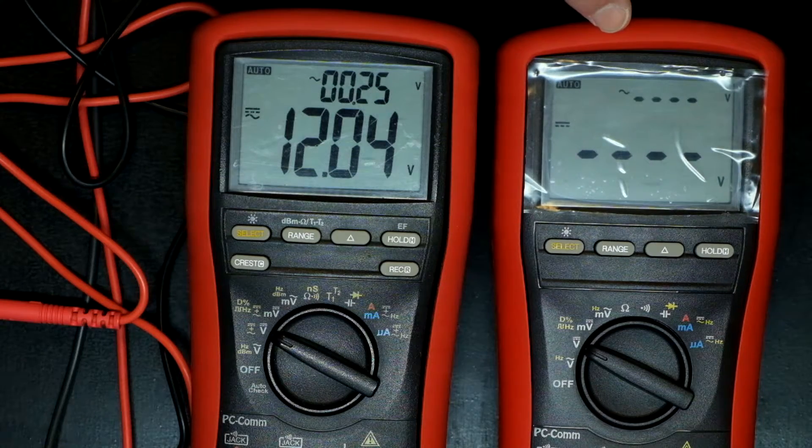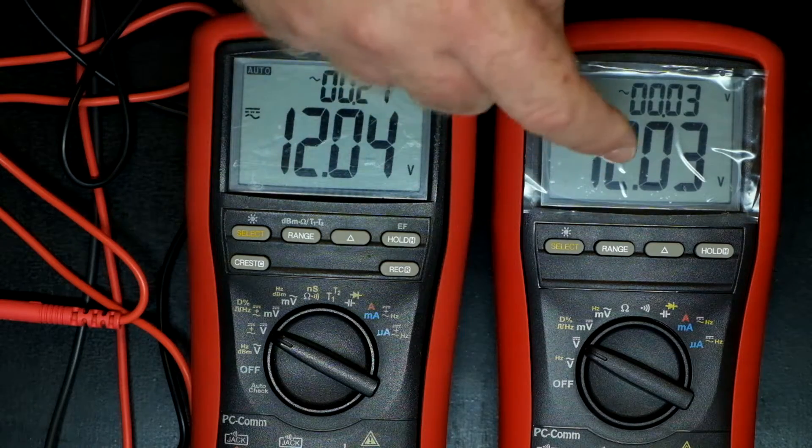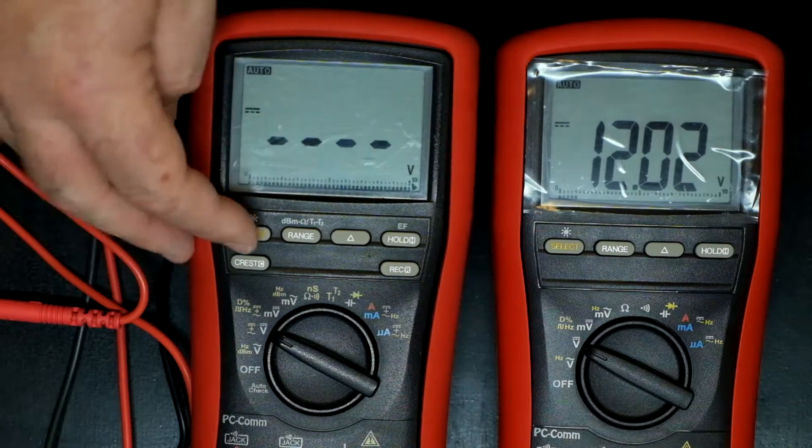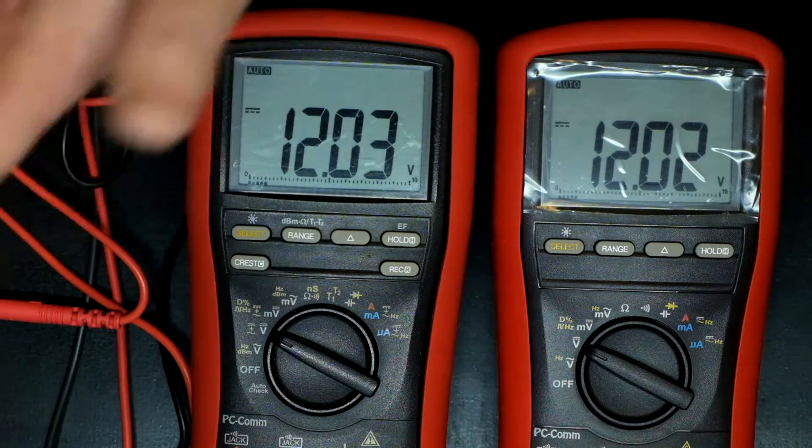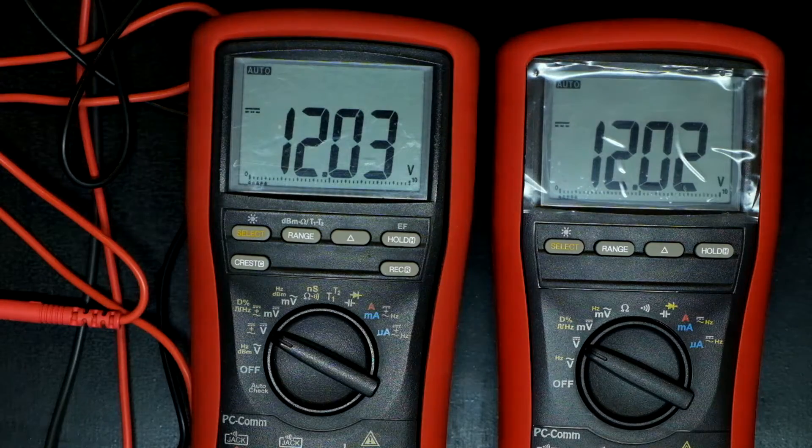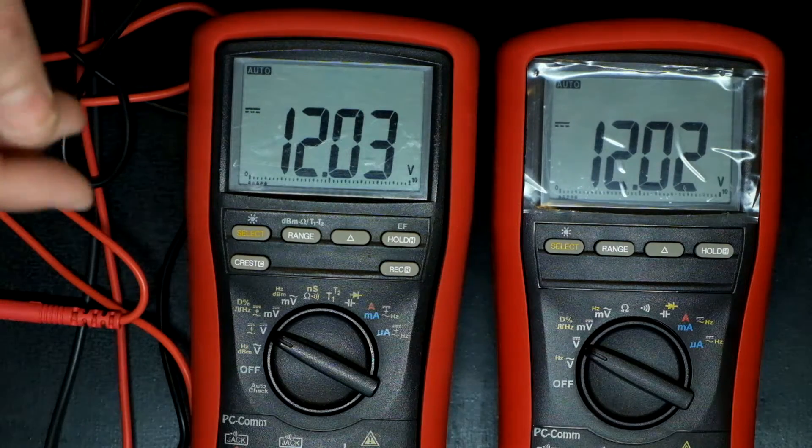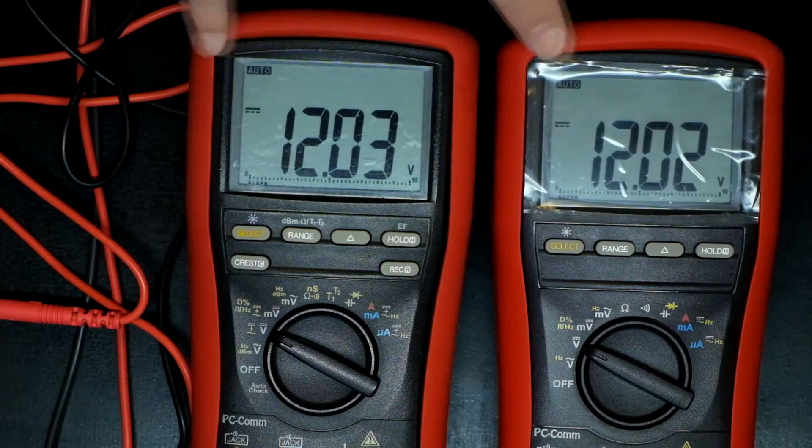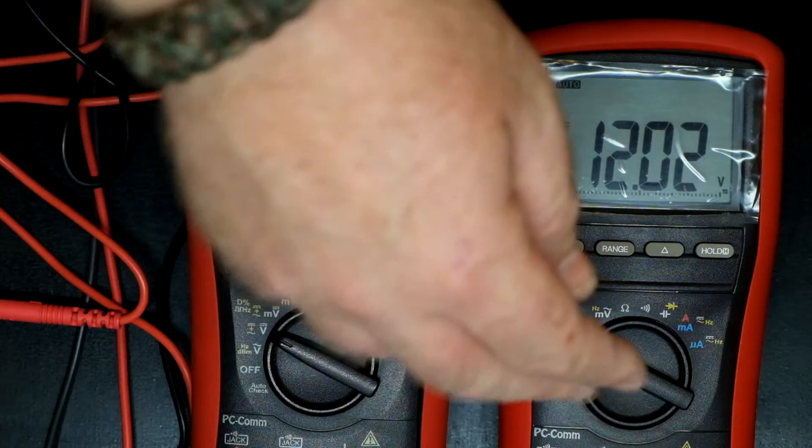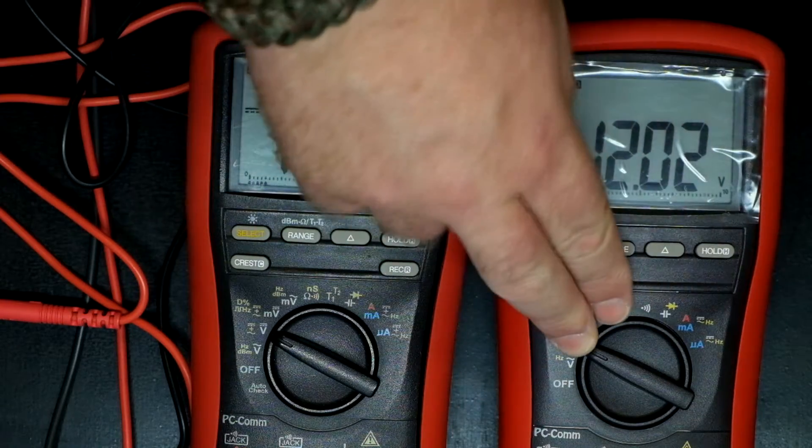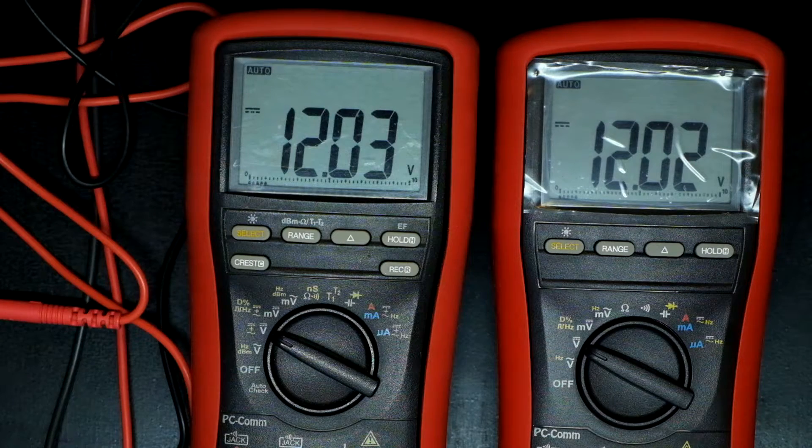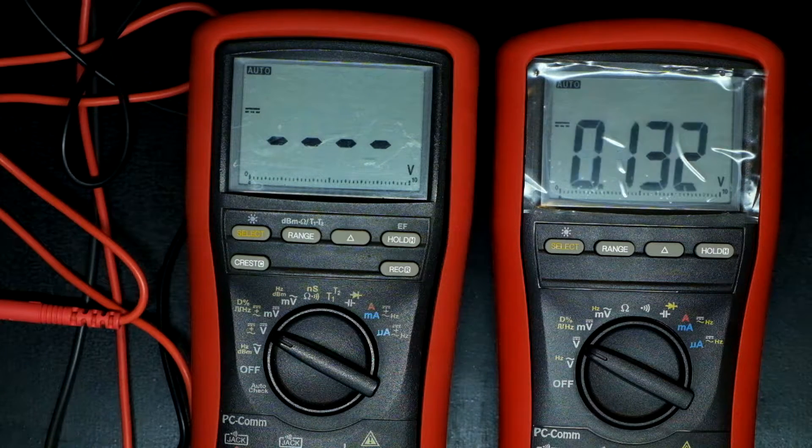This one will basically do DC AC or DC, whereas this one you can maneuver things around a little bit and do some different things, which is quite handy. But the meters are two completely different class meters, so you can't really compare them. For resistance, I'm not going to worry about doing measurements because I think it's all going to be well within spec.